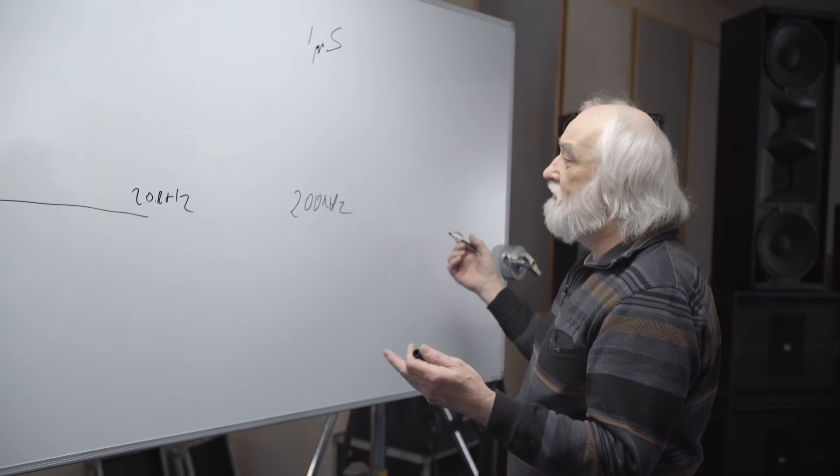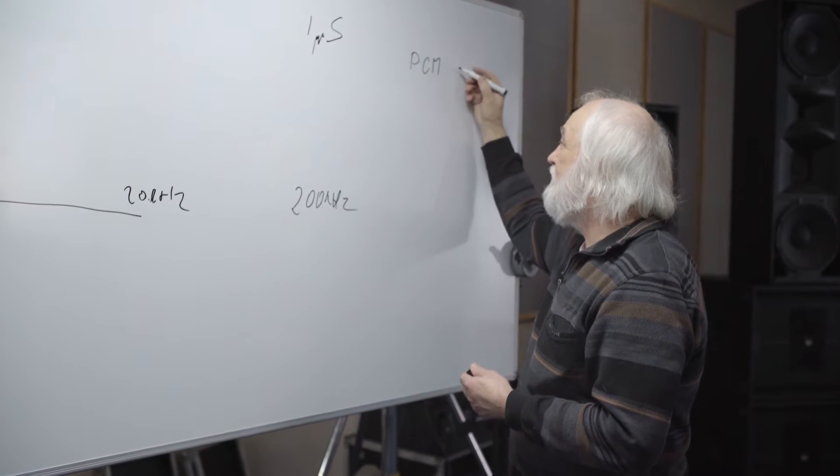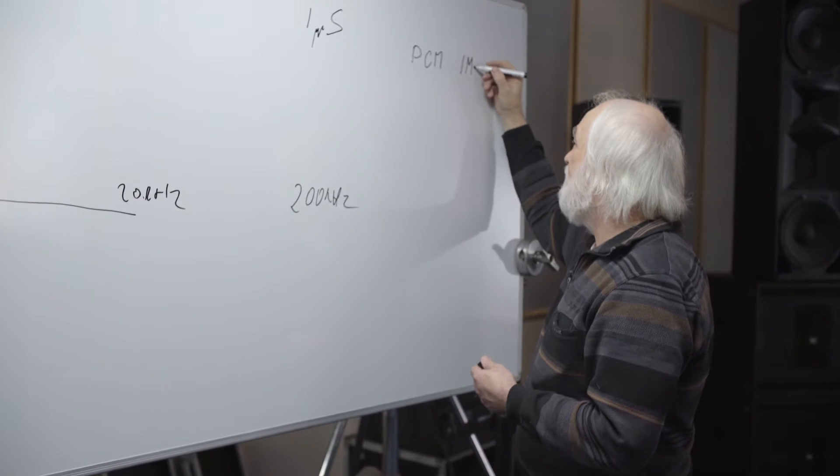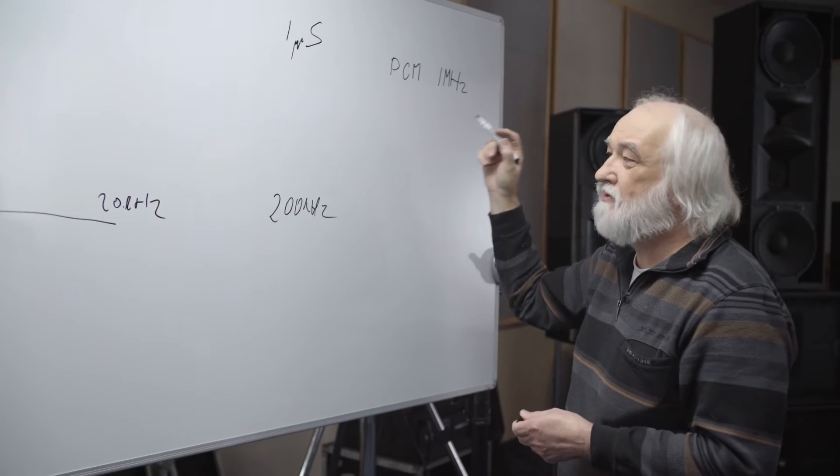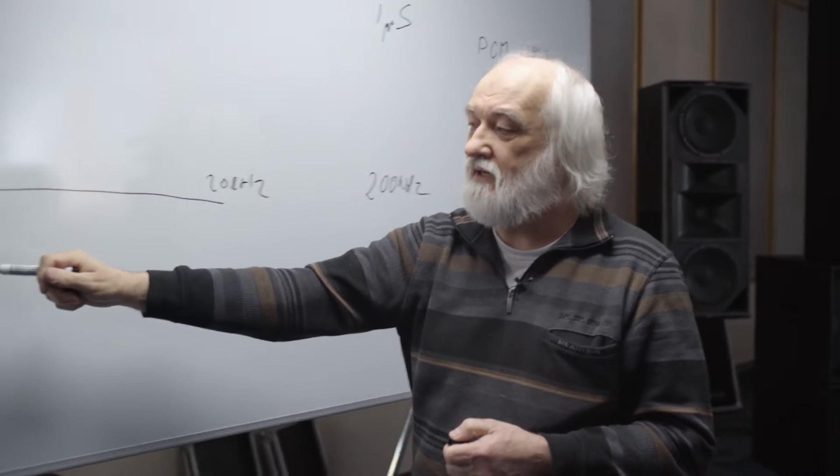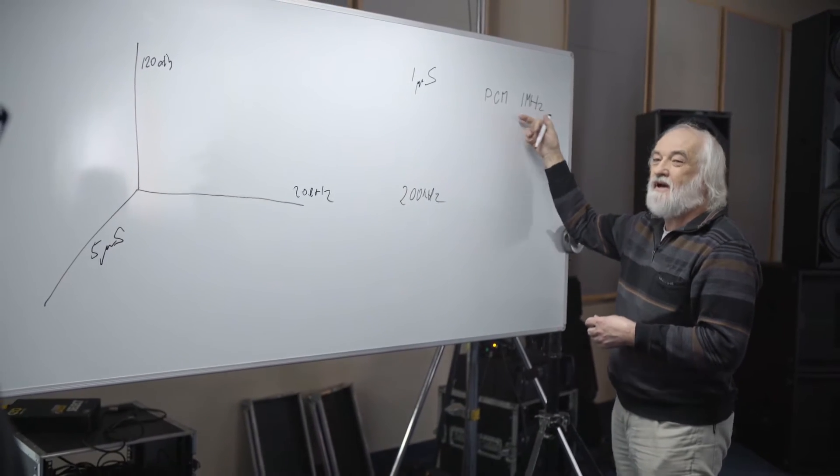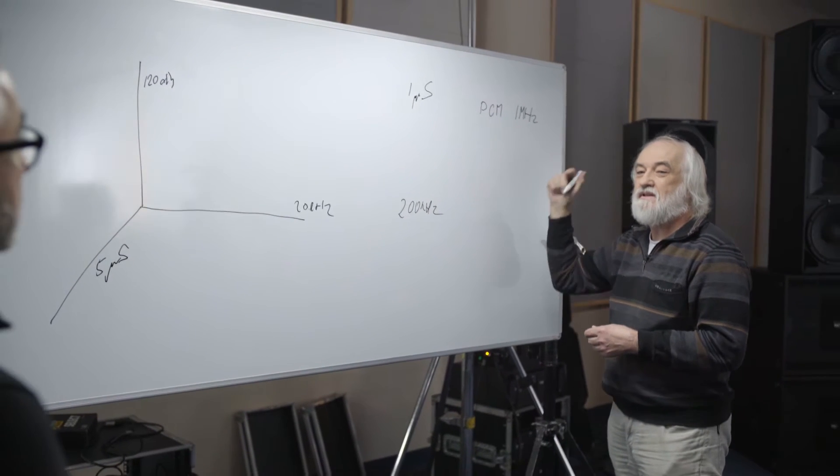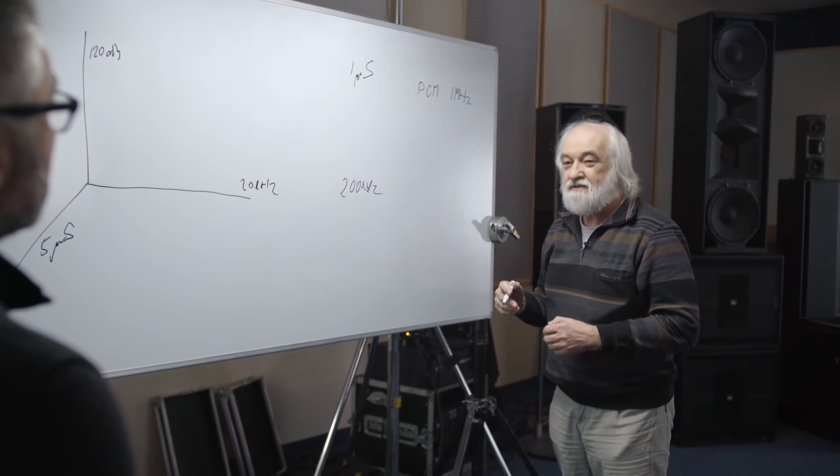Really, if you want to have PCM, we need 1 MHz sampling to satisfy that number here, the 5 microseconds. And now you can calculate from that what kind of level of DSP you need. And we're getting into the tens of gigahertz.